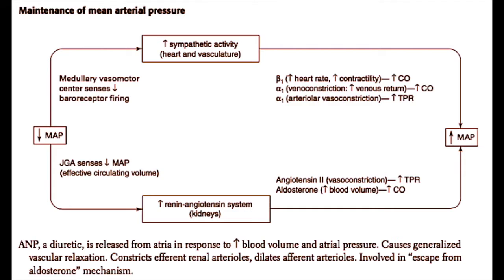A decrease in mean arterial pressure can also activate the juxtaglomerular apparatus, or the JGA, also known as the macula densa. This senses a decreased mean arterial pressure, which activates the renin-angiotensin-aldosterone system. Renin is released by juxtaglomerular cells in the kidney, and renin is then cleaved into angiotensin-1 and angiotensin-2.